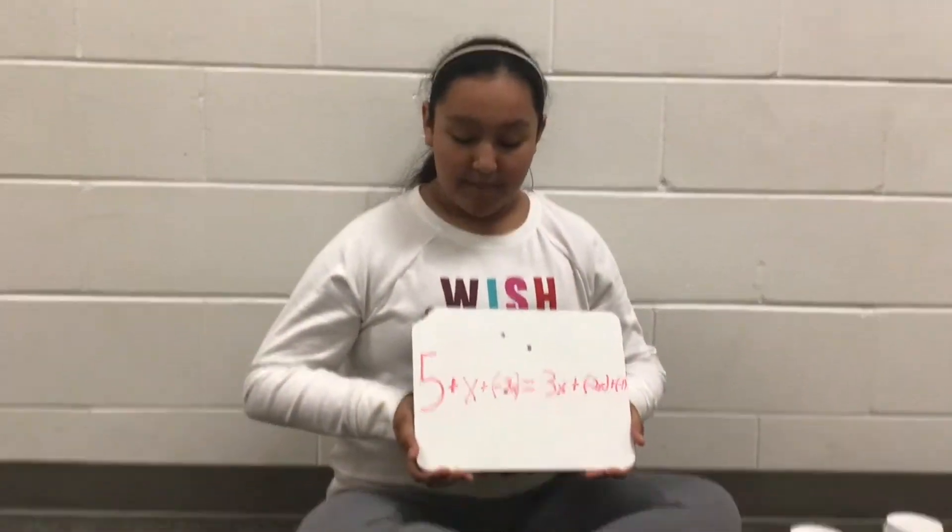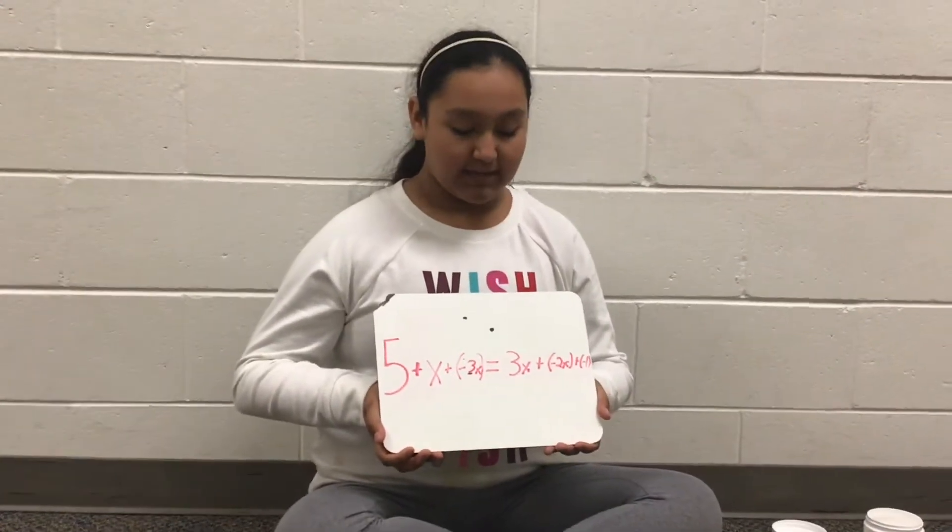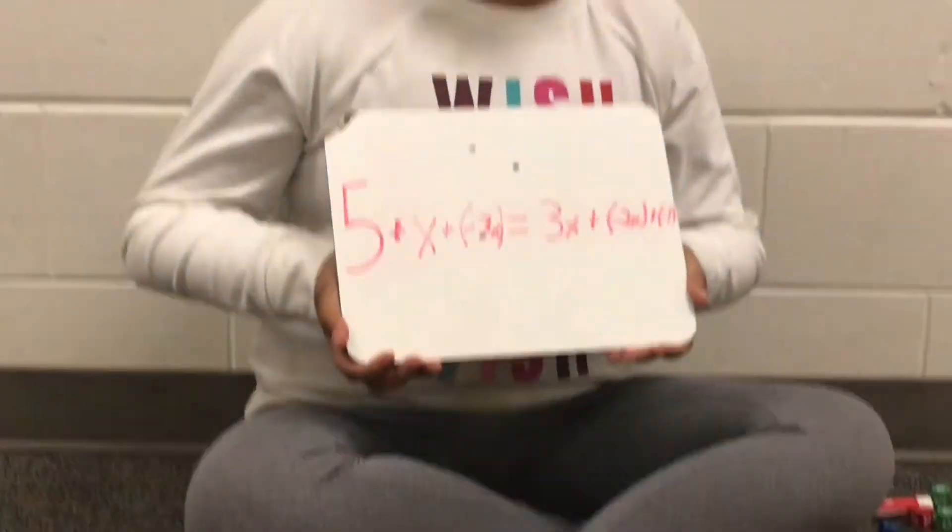My last problem is 5 plus x plus the opposite of 3x equals 3x plus the opposite of 2x plus negative 1.